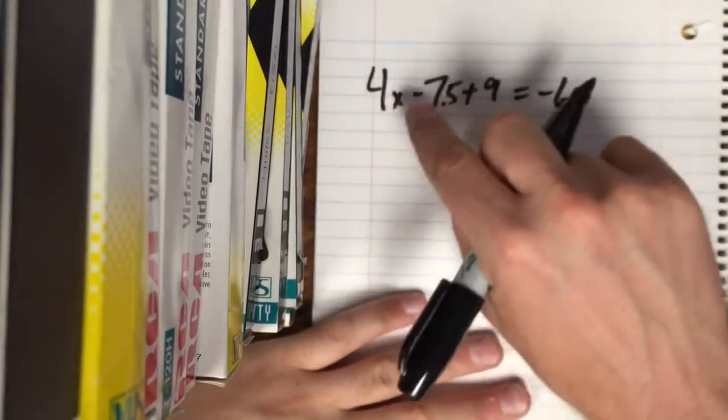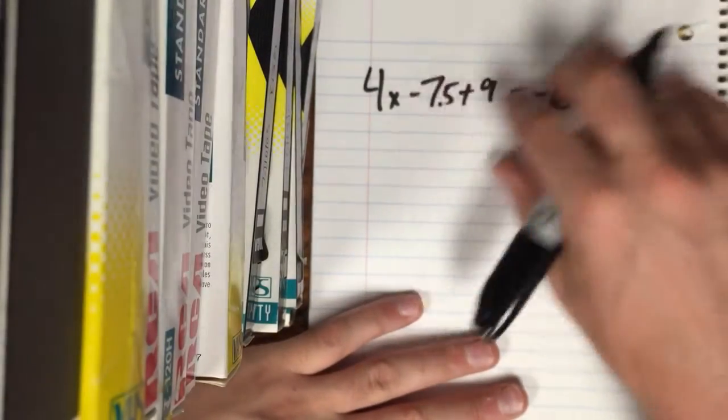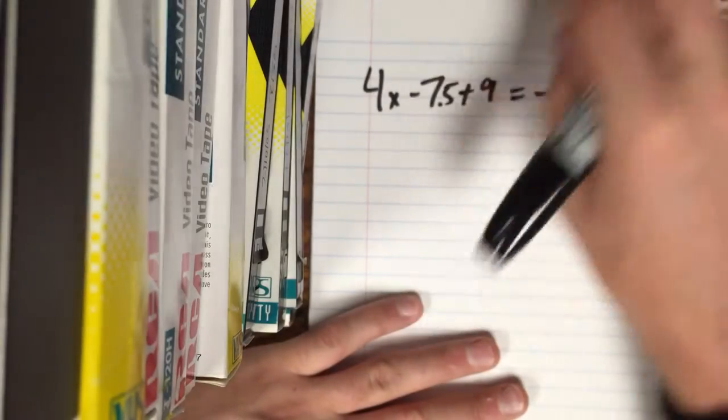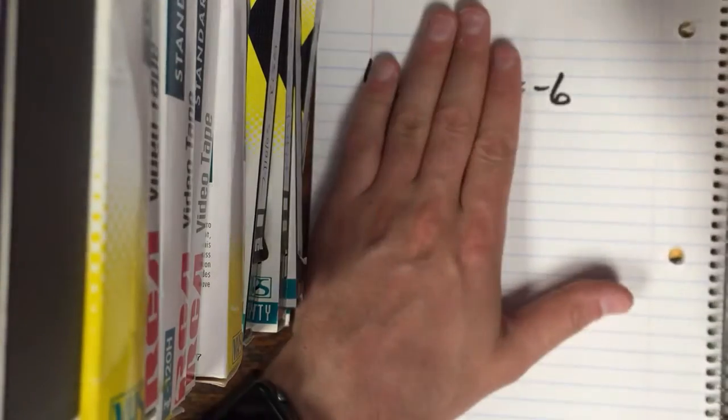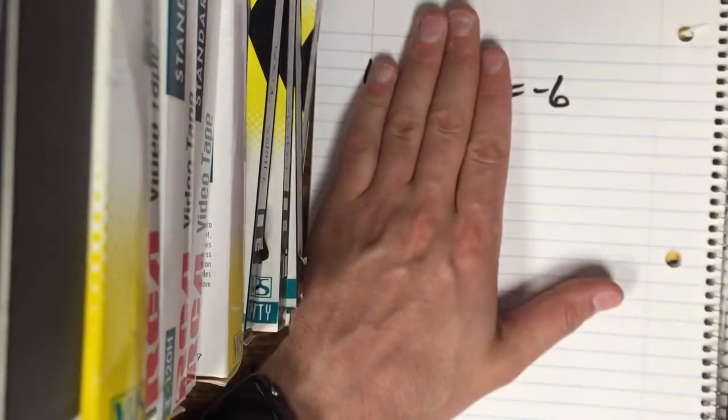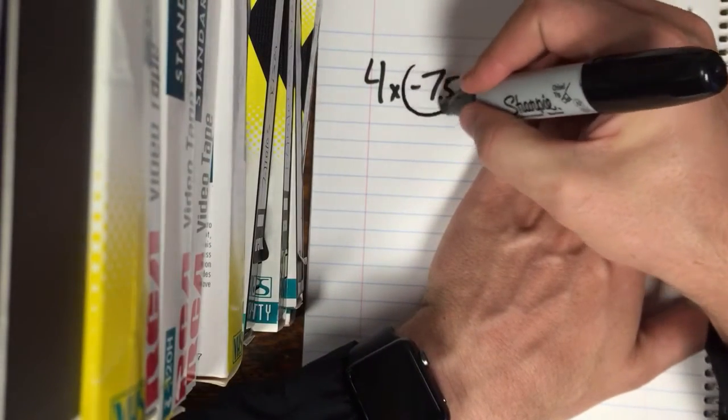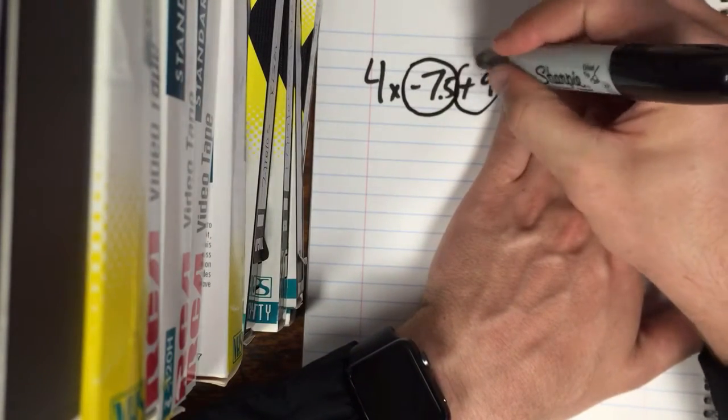And excellent. Alright so our goal here is to get X by itself. The first thing we need to do is we need to simplify the stuff on each side of the equal sign. There it's simplified. You can't really combine that with anything.